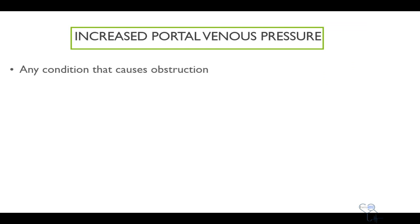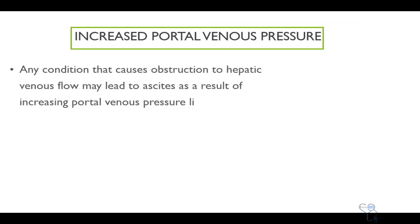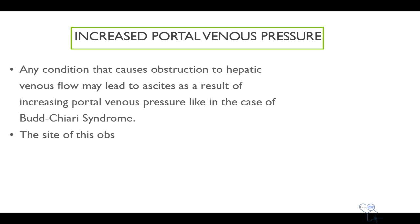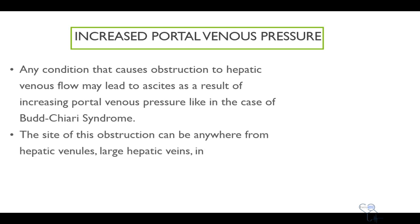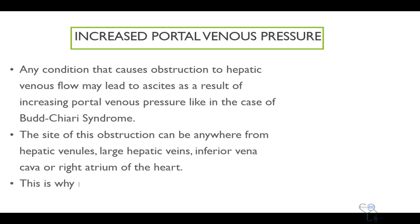Any condition which causes obstruction to the hepatic venous flow may lead to ascites as a result of increased portal venous pressure — for example, a condition called Budd-Chiari syndrome. The site of obstruction can be anywhere from the hepatic veins, large veins, inferior vena cava, or right atrium of the heart. This is why right heart failure causes ascites.